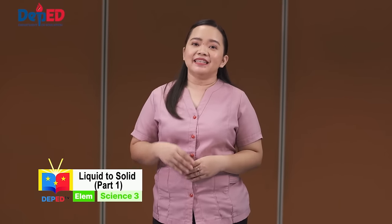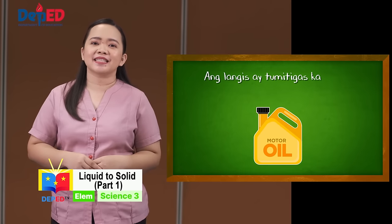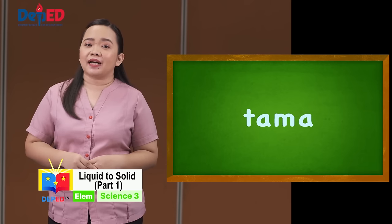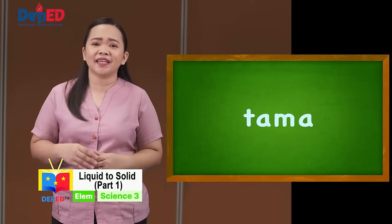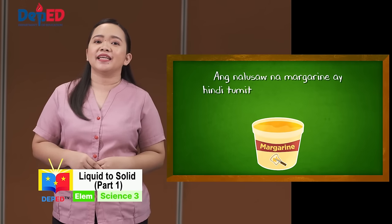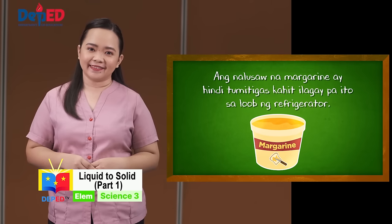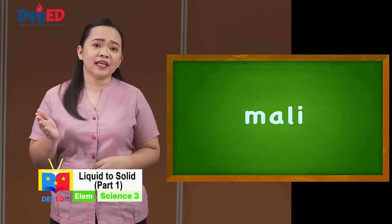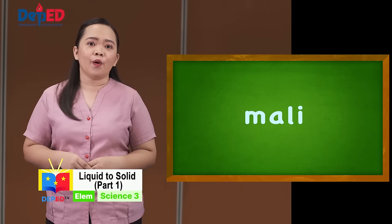Ngayon naman mga bata, sagutang natin ang inyong ginawa. Para sa unang bilang — ang langis ay tumitigas kapag ito ay naiwan sa malamig na lugar — Tama! Sapagkat ang liquid, kapag inilagay sa lugar na malamig o mababa ang temperatura, ito ay titigas at magiging solid. Ikalawang bilang — ang nalusaw na margarine ay hindi tumitigas kahit ilagay pa ito sa loob ng refrigerator — Mali! Sapagkat ang lusaw na margarine ay isang liquid, ito ay titigas at magiging solid kung ito ay ilalagay sa refrigerator na mayroong mababang temperatura.